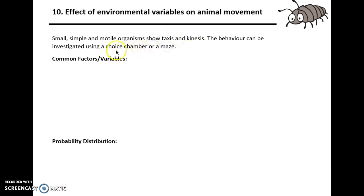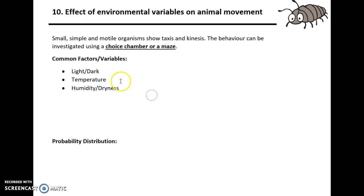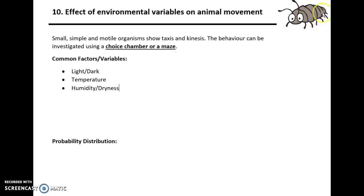We investigate these using choice chambers or mazes. Certain factors or variables that you can investigate are things like light and dark, temperature, and also humidity such as dryness. You'd look at where these organisms accumulate more. Wood lice would logically be found more in the dark because that's where their natural habitat is. They'd avoid high temperatures because too much water could evaporate from their gill surfaces.